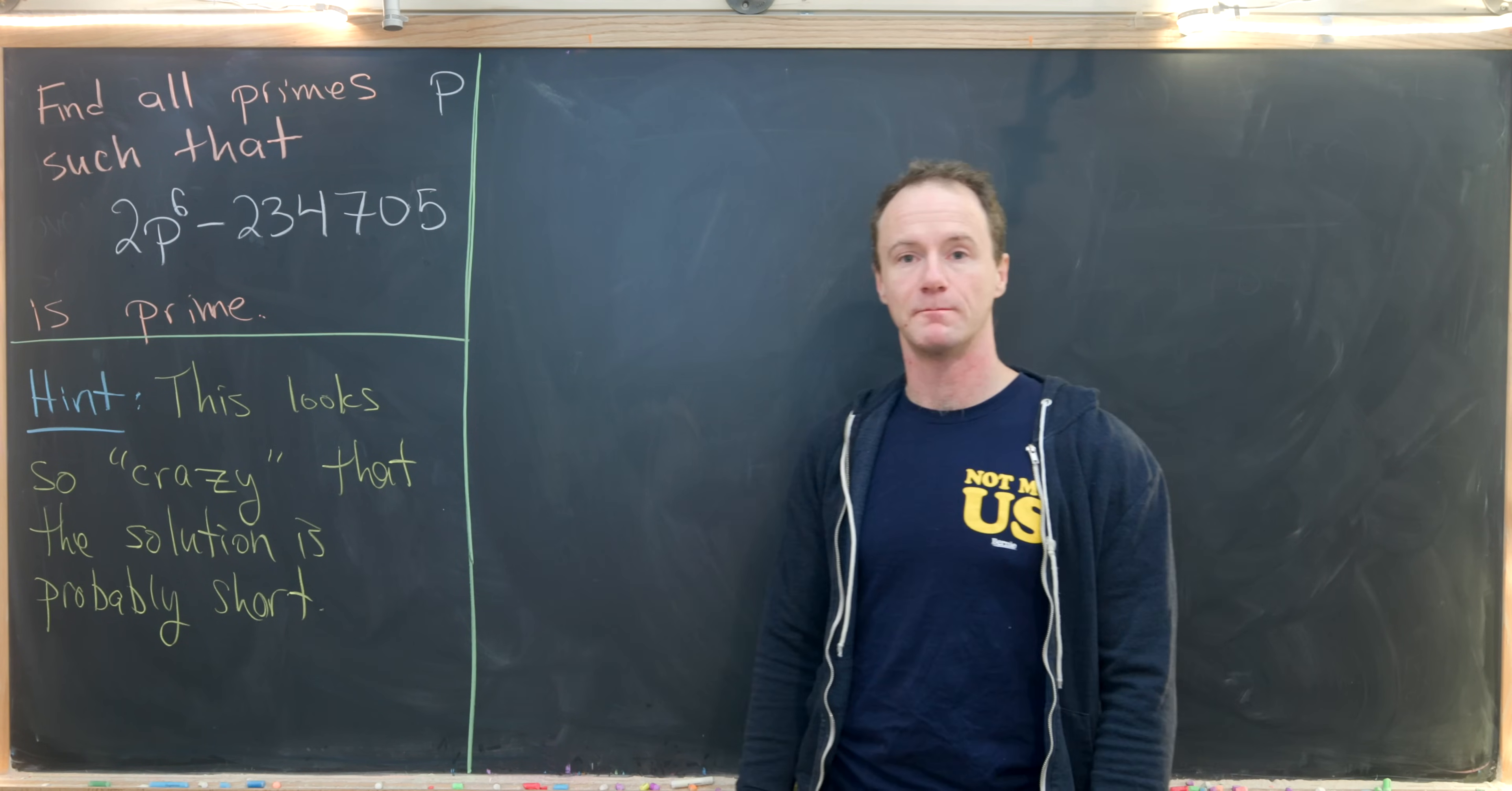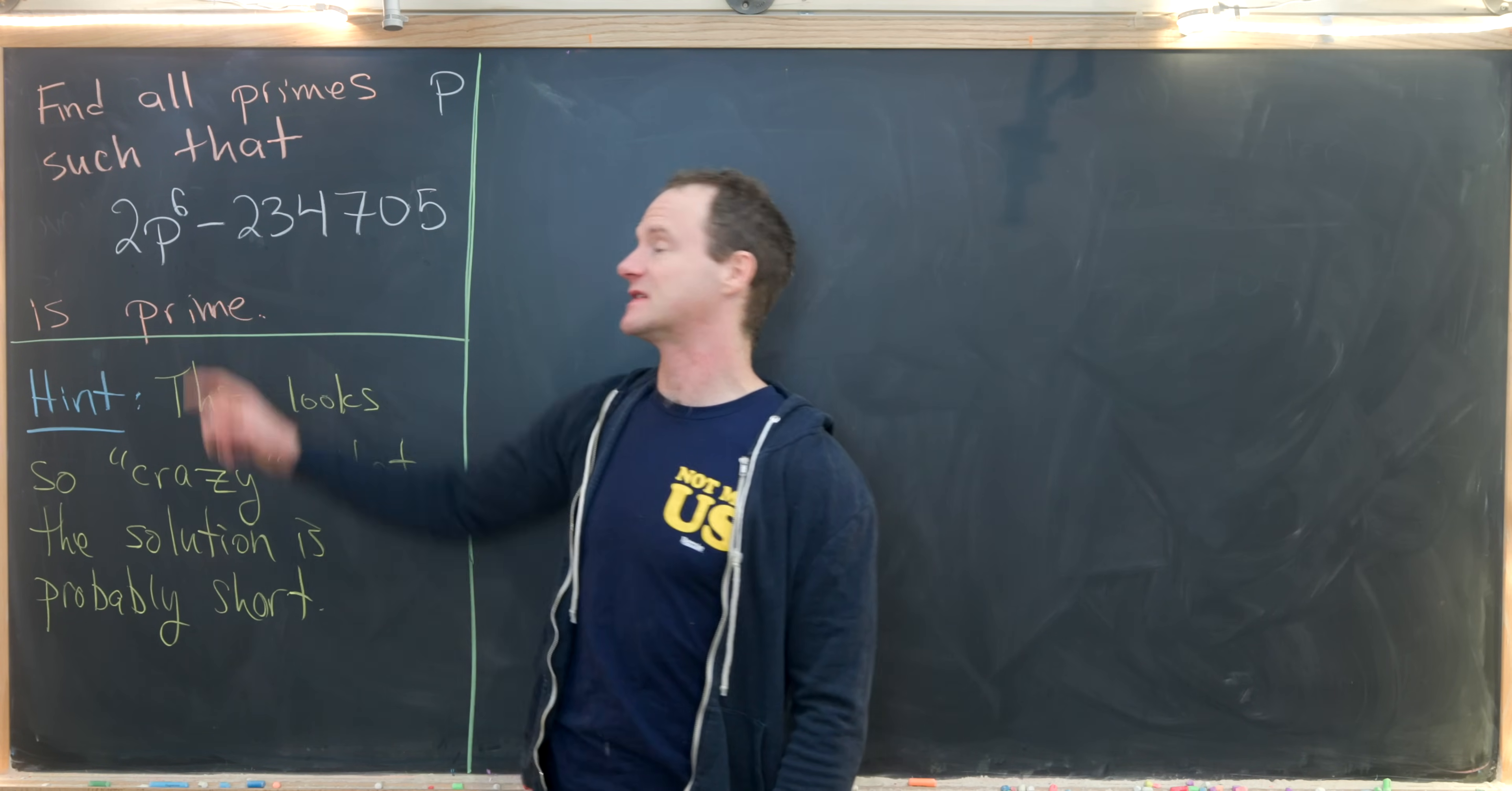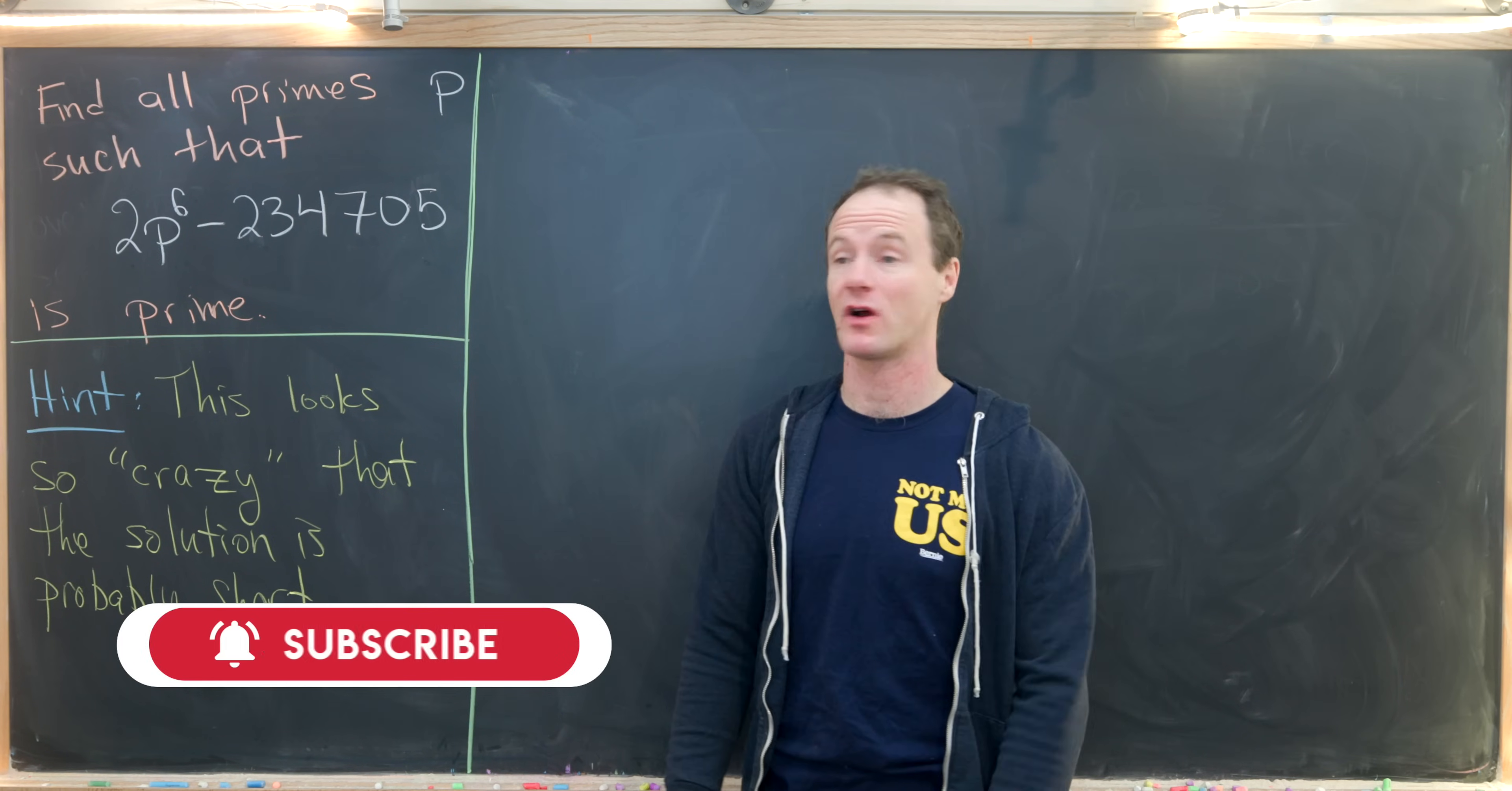Here I've got this quick number theory problem. So our goal is to find all primes p such that 2 times p to the 6th minus 234,705 is a prime number.